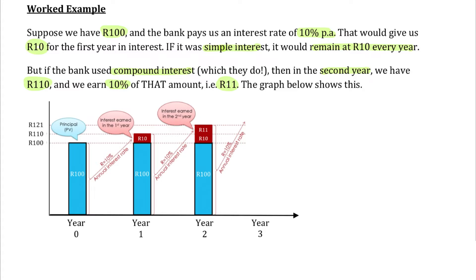I know that doesn't sound like a lot, but just wait and see what happens. The graph shows this. At year zero we have R100. By the end of the first year the bank has paid us R10 of interest, giving a total of R110. Now I'm entitled to earn interest on all of that R110. There's the R11 — the extra interest earned in year two. Adding R11 onto R110 gives us R121 after two years.